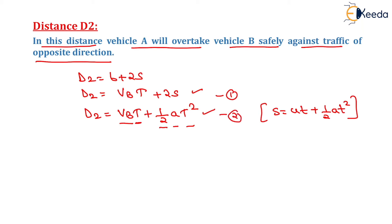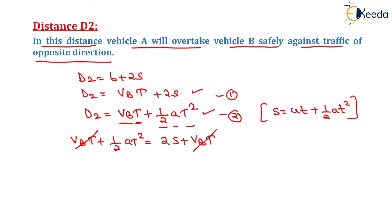Both expressions for D2 are equal, so we equate them: VB×T + ½×A×T² = 2S + VB×T. The VB×T terms cancel, and solving gives T = √(4S/A). This is the formula for computing time T, where S is the space headway.